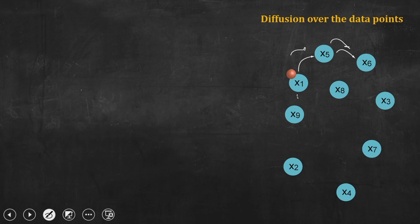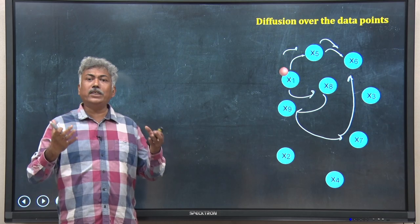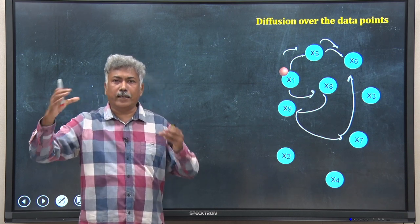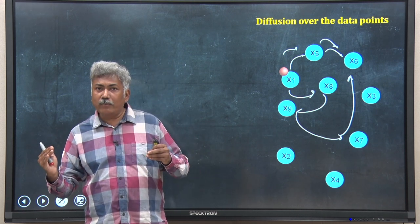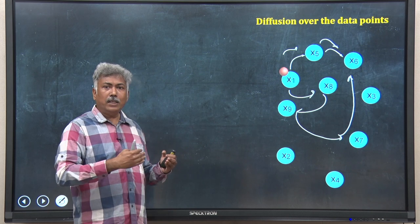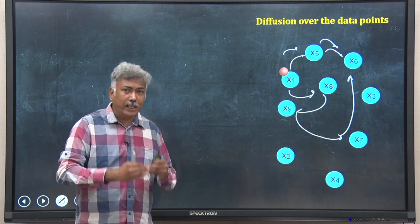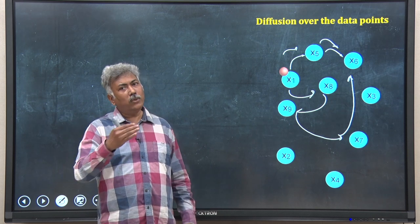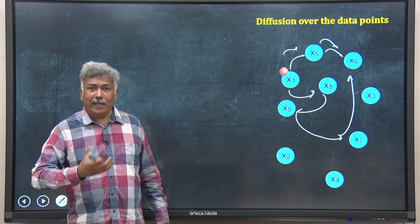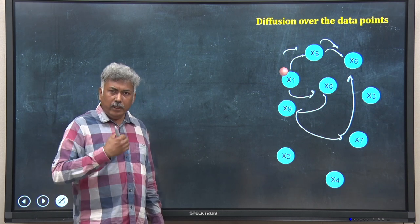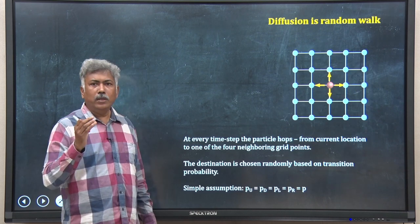How do I numerically capture this diffusion process? There are many ways — the one we will use here is a probabilistic way. As an example of a simple diffusion model, consider a particle on a 2D grid. At each time step, it jumps to one of its four neighbors: up, down, left, or right. We associate a certain probability of jump — for example, P_up is the probability of going to the upper grid point, P_r for going right. In this way, we can simulate the diffusion of the particle across the whole space.